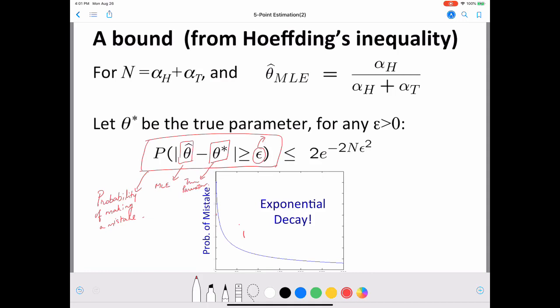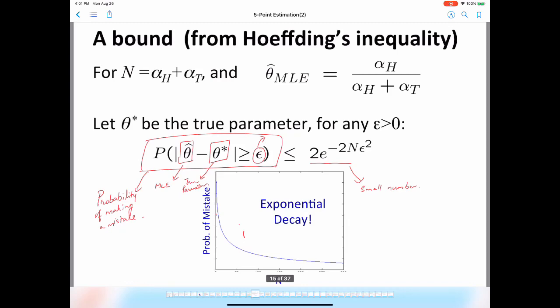And we are bounding the probability of making a mistake by this. So which means that we want to limit this probability of making a mistake to another small number. So this is another small number which we want to limit the probability of making a mistake. So let's look at this by substituting some numbers and going through an example.